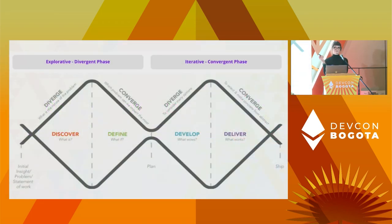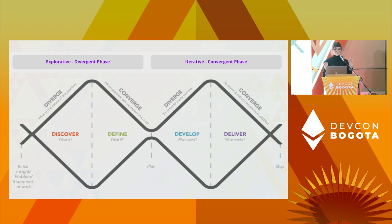I would like to start from a process that has been proven to work very well: the Double Diamond process, which was popularized by the British Design Council in 2005. This process is based on a diverge-converge process developed by linguist Béla Bánáthy. This methodology suggests a product process should have four phases: discovery and definition, which together make the explorative and divergent phase, and then development and delivery, which together make the iterative and convergent phase.